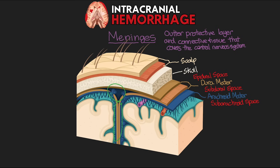The lower boundary of the subarachnoid space is formed by the pia mater, the delicate innermost membrane covering the brain. It forms the basement membrane that helps contain the cerebral spinal fluid above it and is the innermost layer of the meninges. Below that is the actual brain tissue itself. Understanding this arrangement of the meninges helps us understand the location of the different bleeds.